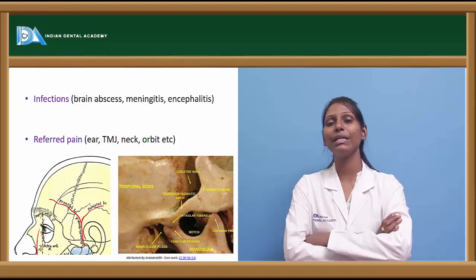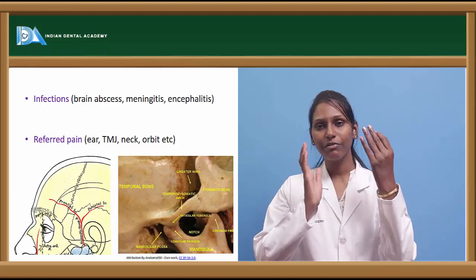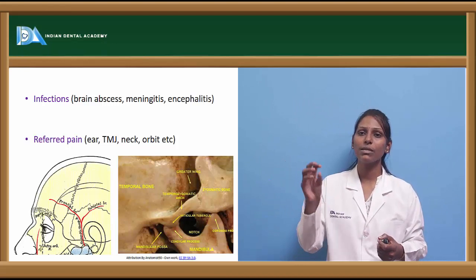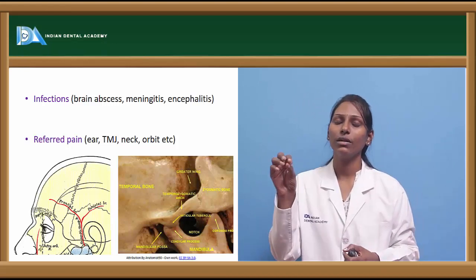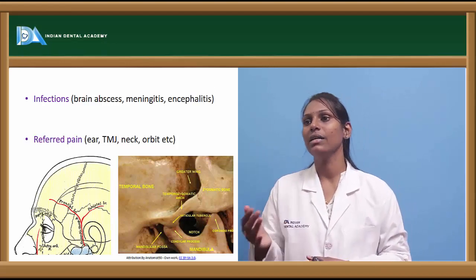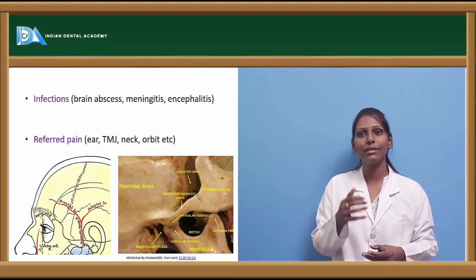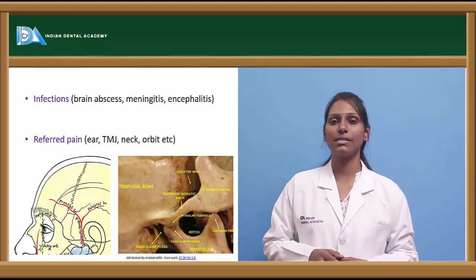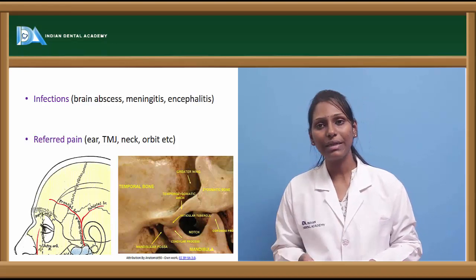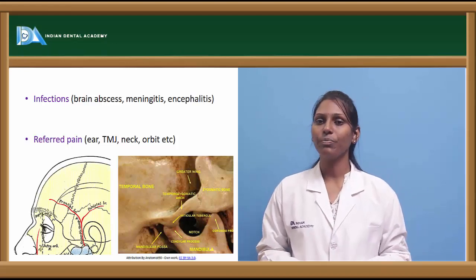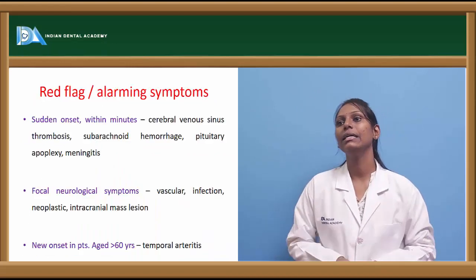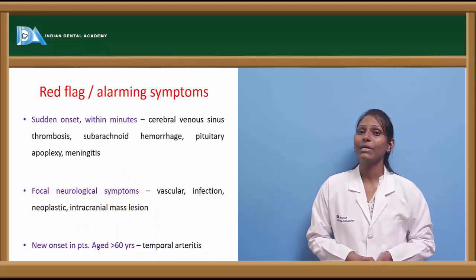Referred pain is pain radiating from a distant or adjacent region where the actual pathology is, but transferred to other facial structures. For example, ear pain can manifest as headache, TMJ pain can also manifest as headache, and neck or orbital pathologies can have referred pain to the temple region.